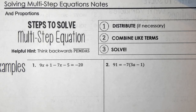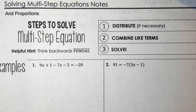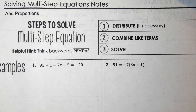The steps are: number one, distribute if necessary. You'll distribute if you see parentheses in your equation — that means you need to distribute the number outside the parentheses, along with the sign that's in front of it, into the parentheses if necessary. Number two, combine like terms. Number three, solve.